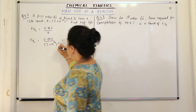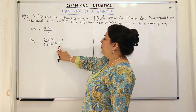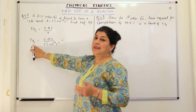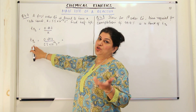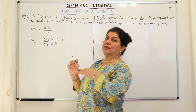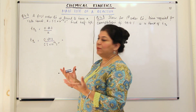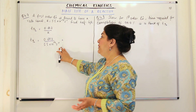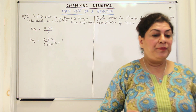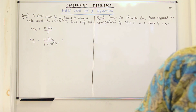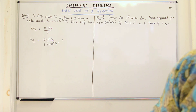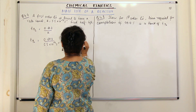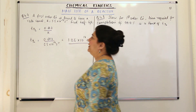Per second is in the denominator of K, so it comes to the numerator as seconds, and T½ is time — which makes sense. When solving for time, the units should be of time, which would be in seconds. When you solve this, you get 1.26 × 10¹⁴ seconds. That is your answer.